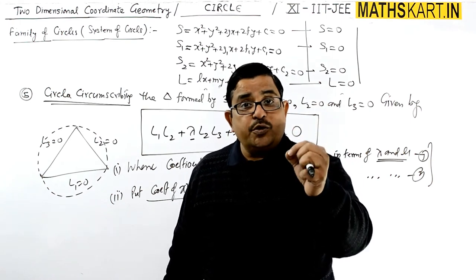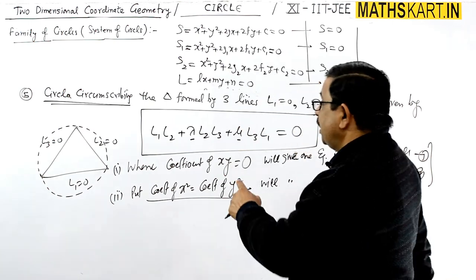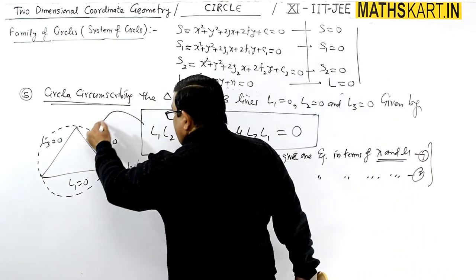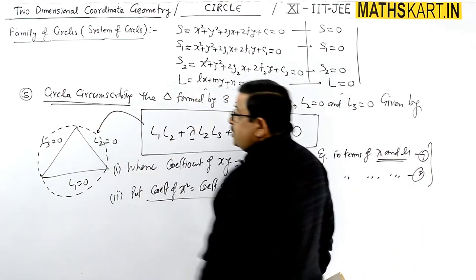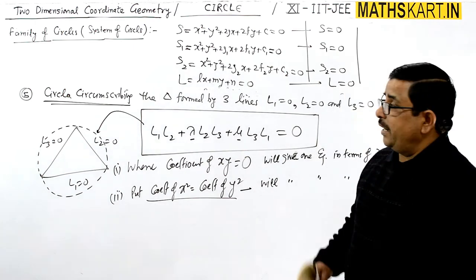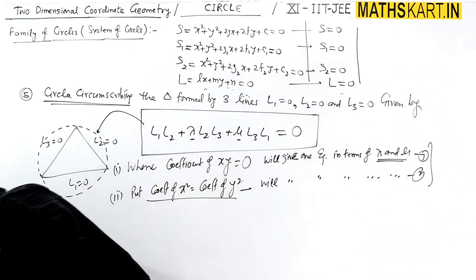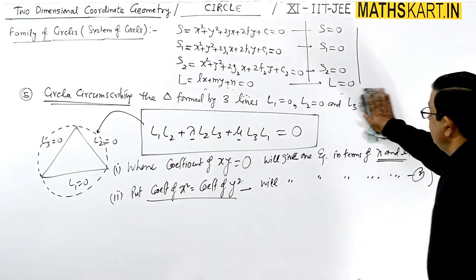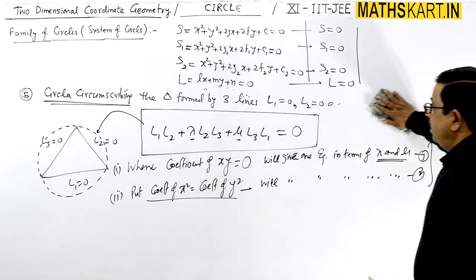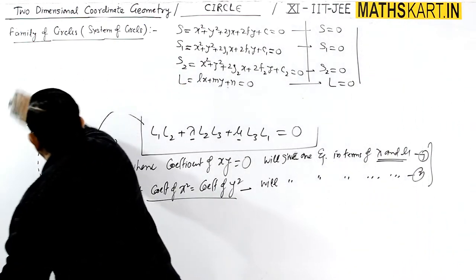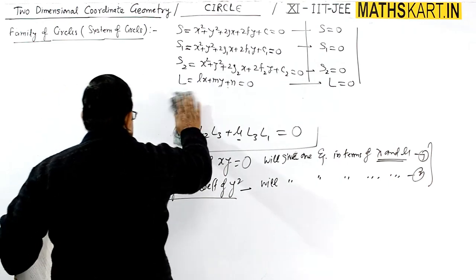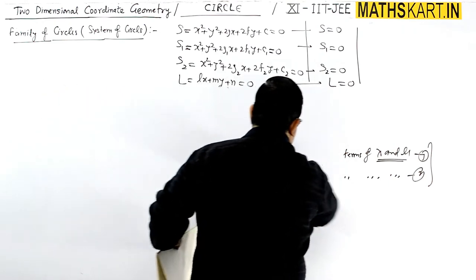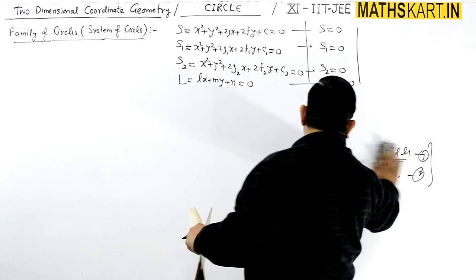Once the values of λ and μ are found, substitute them back into the equation. That gives you the circumscribing circle. It is a very good and efficient application.